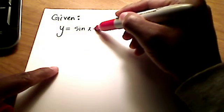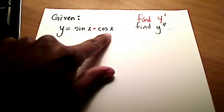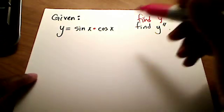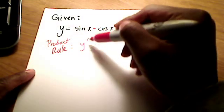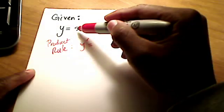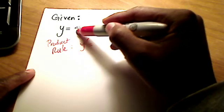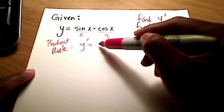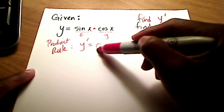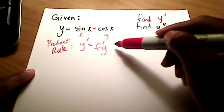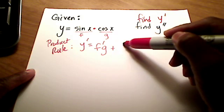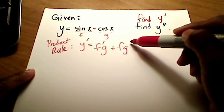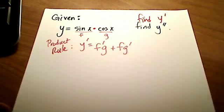Since this is a product — sine x times cosine x — we can use the product rule. A quick recap: if you split these up and call them f and g, then the product rule says give me the derivative of f times g, plus f times the derivative of g, and sum those up.